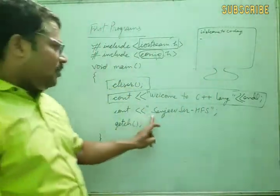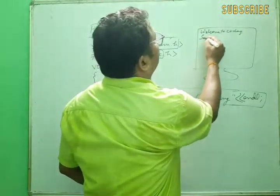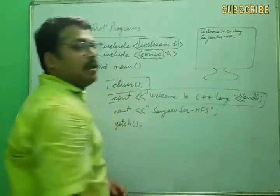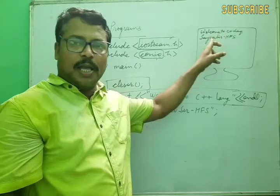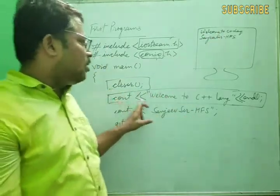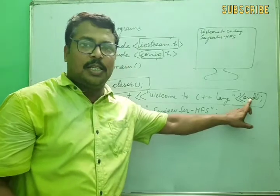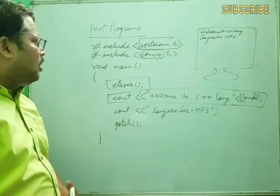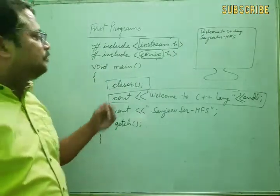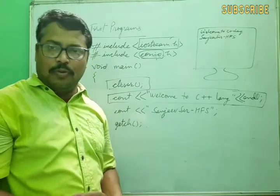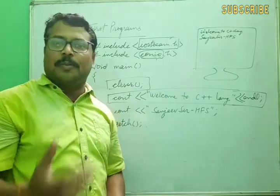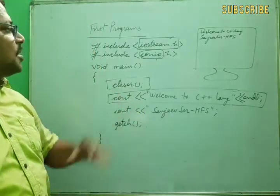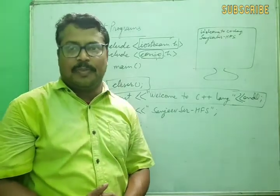With endl in the line — endl means end line — the cursor moves to a new line, and the next message is displayed on the new line. So we get the output in two lines because after cout we used endl, which moves control to the next line. Now we will discuss C++ programming rules — conventions and precautions to follow — and then we will move to the C++ compiler and the next topic. Thank you.